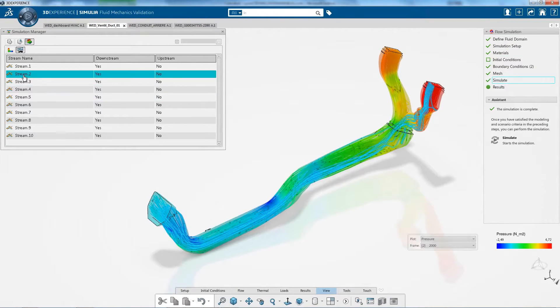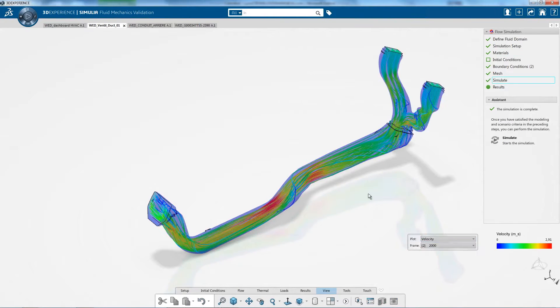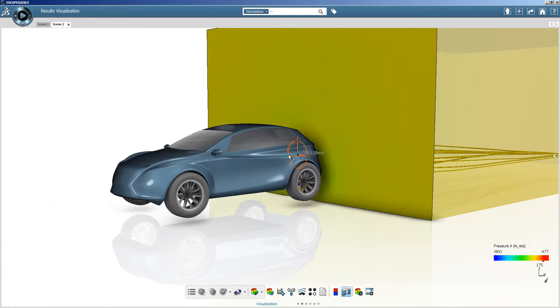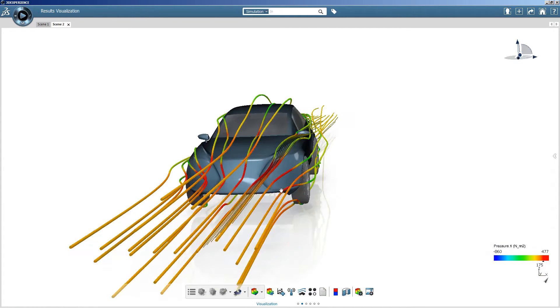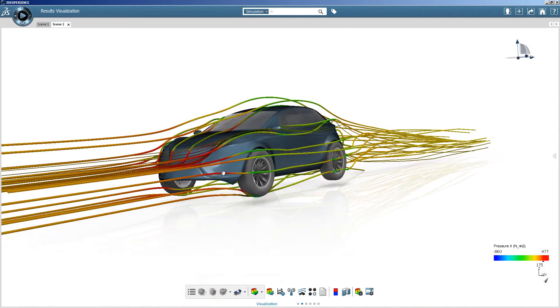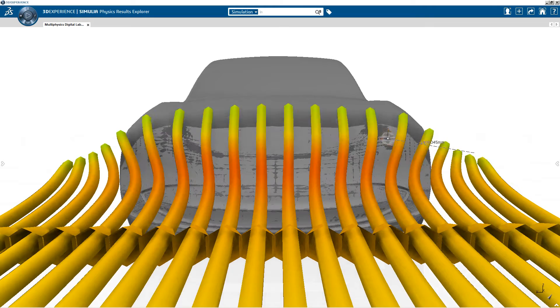It's used for such diverse applications as HVAC, aerodynamics, microfluidics, and it's used in all the industries that we serve in Simulia including aerospace, automotive, consumer packaged goods, high-tech, life sciences, even natural resources, oil and gas.